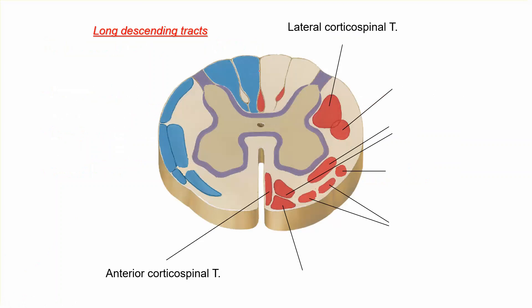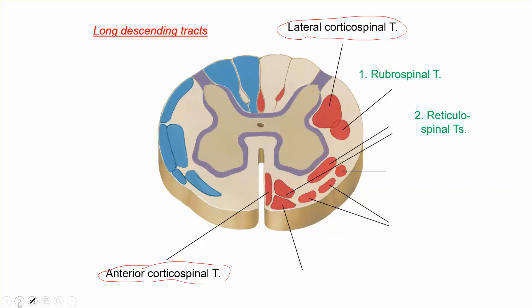As we can see in this diagram, the lateral corticospinal tract and anterior corticospinal tract are related to the pyramidal system. The rubrospinal tract is a lateral tract, close to the lateral corticospinal tract. Then we have the reticulospinal tract, the tectospinal tract, the olivospinal tract, and the vestibulospinal tract, which are all anterior tracts.